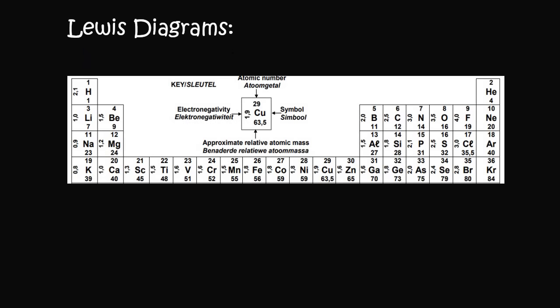Let's try sulfur next. Sulfur is in group one, two, three, four, five, and six. So we go separate first up until four, and then you can pair them up. That is what sulfur would look like.